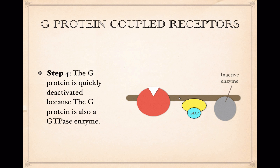In step four, the G-protein has returned to its inactive form. It has disengaged from the enzyme, which inactivates the enzyme, and the whole system is ready to receive a new signal. This happens because the G-protein, in addition to being activated by the receptor, can also deactivate itself by acting as a GTPase enzyme — it breaks GTP down to GDP, resetting itself and making it an off switch again.